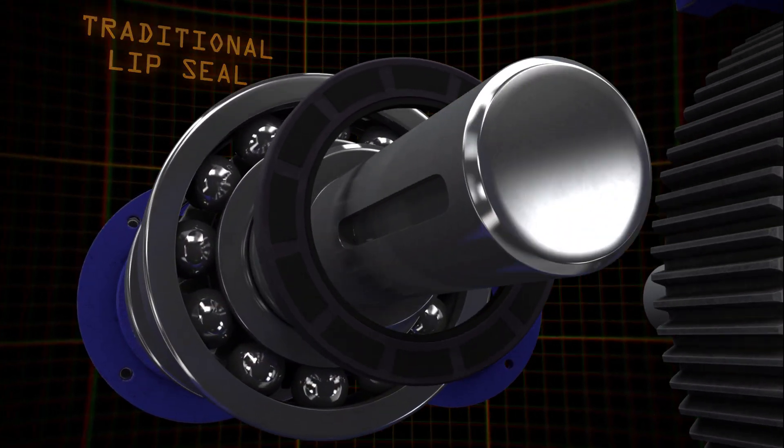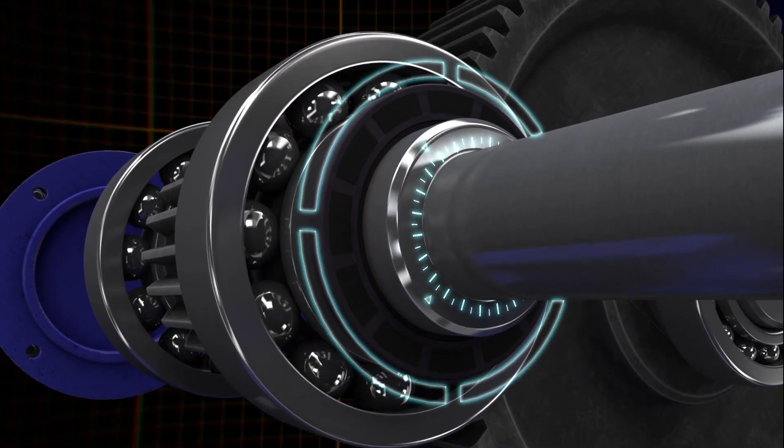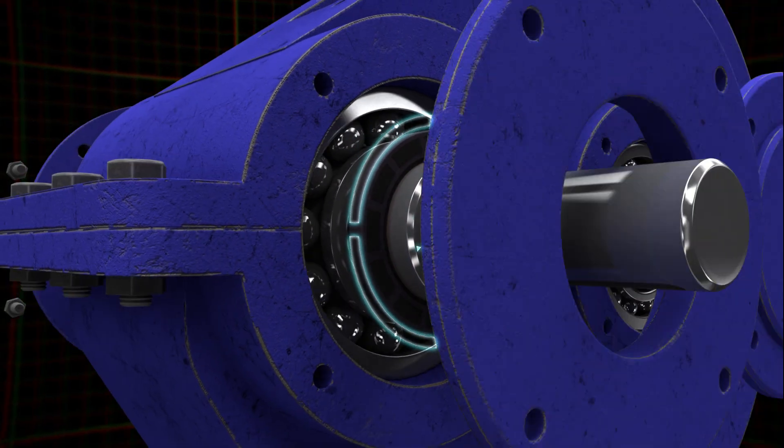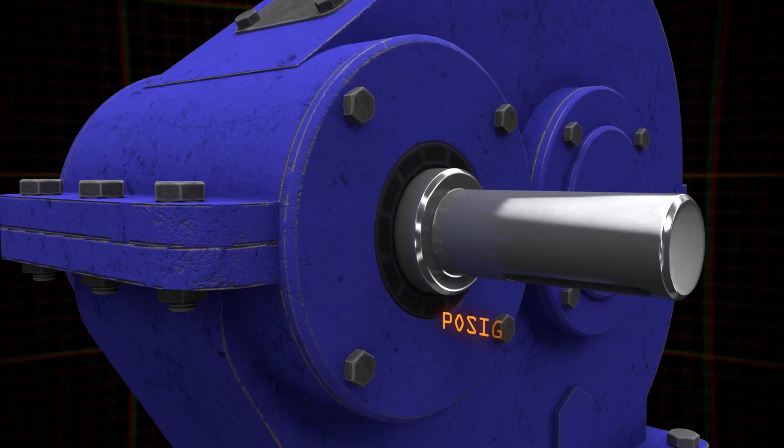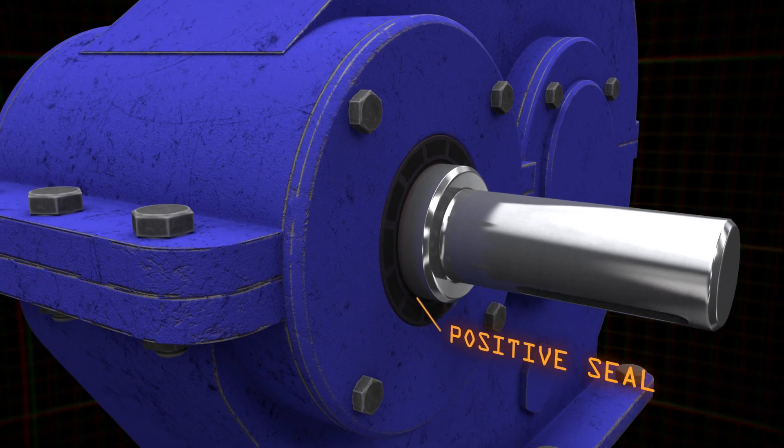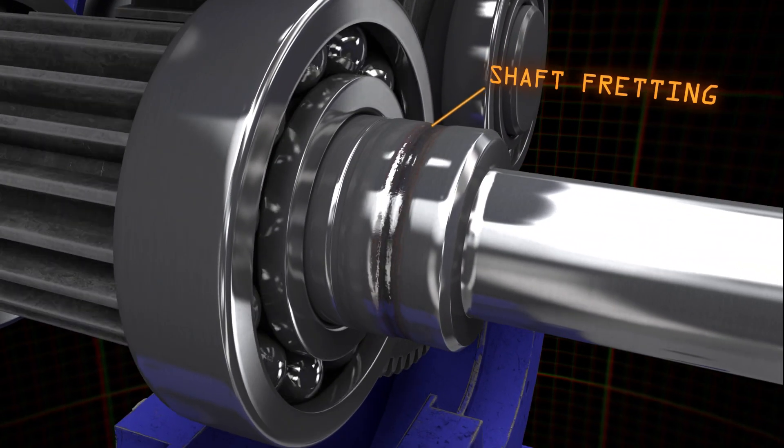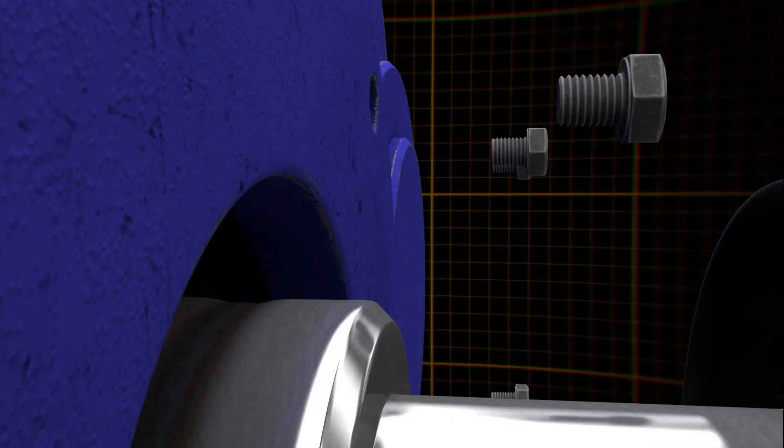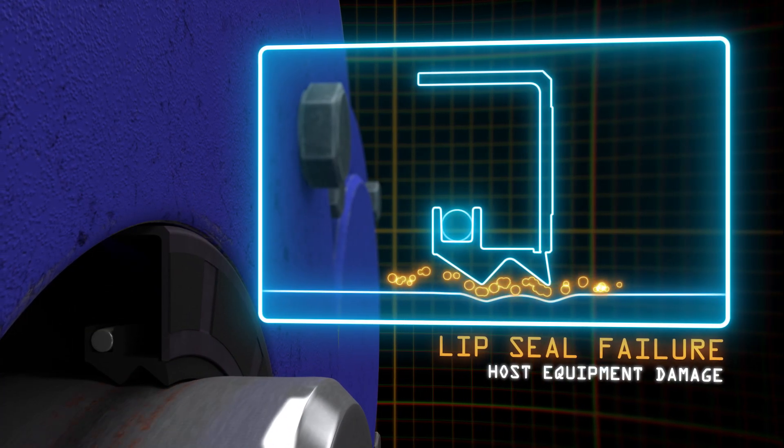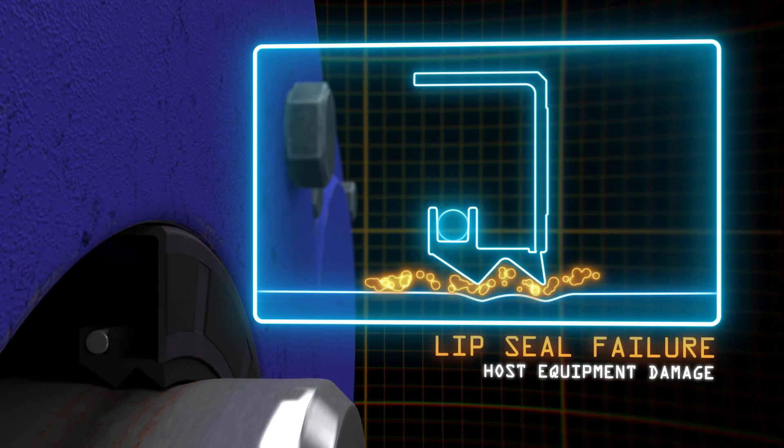Traditional lip seals use the rotating shaft as their primary sealing surface. While the solution created a positive seal, the resulting friction would over time create fretting along the shaft, allowing lubricants to escape and contaminants to enter.